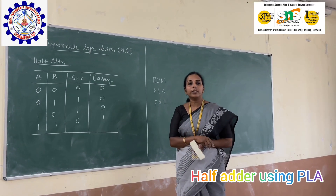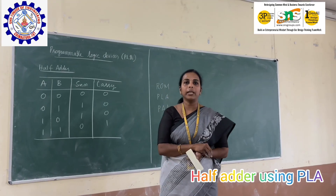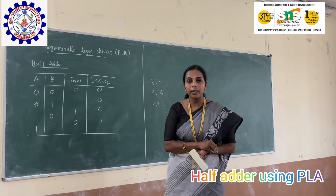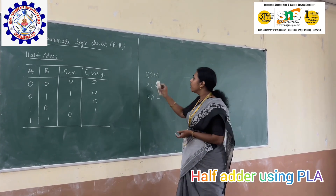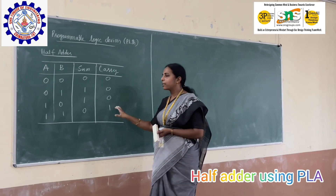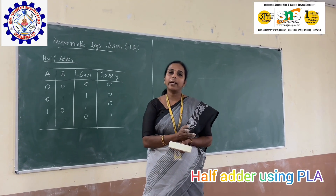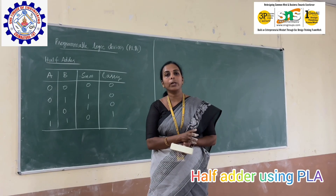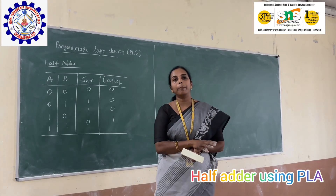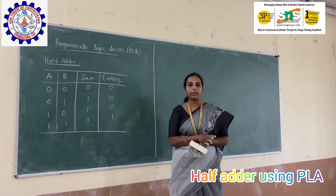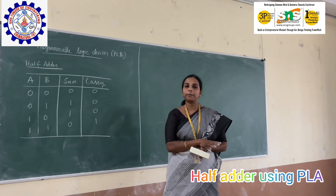In today's class we are going to discuss PLA and PAL with respect to a half adder, which is a combinational circuit. Already we have designed half adders using normal gates. Now, using PLA and PAL, how can we design a half adder? In the case of PLA, both AND logic and OR logic will be programmable. In the case of PAL, the AND logic will be programmable and OR logic will be fixed. In the case of ROM, the AND will be fixed and OR will be programmable. This is the difference between the three types of PLDs.